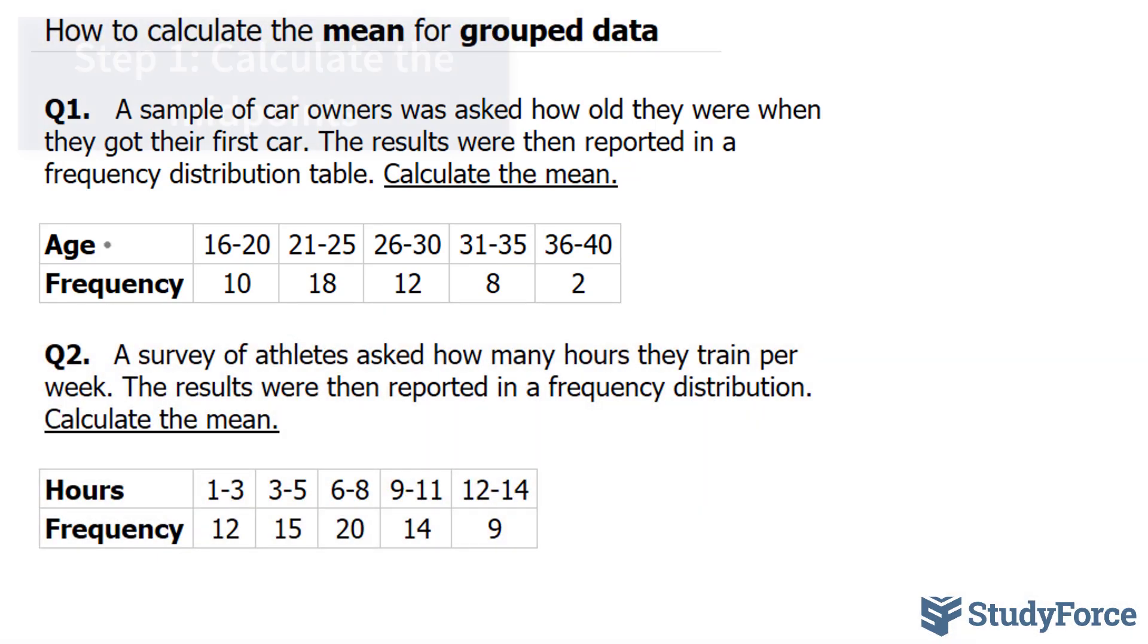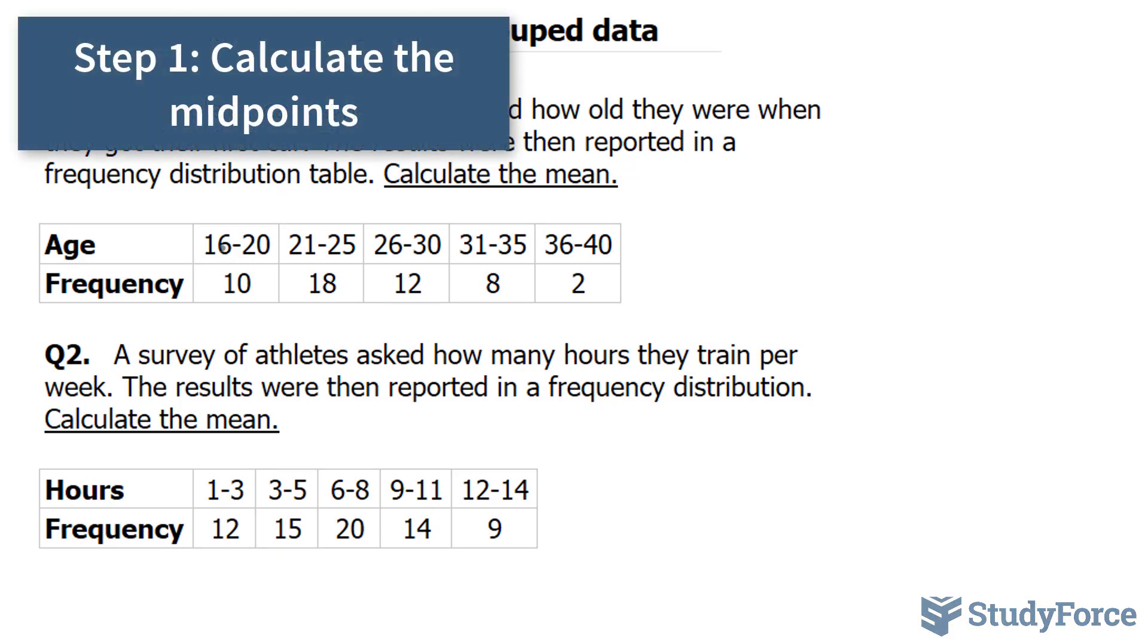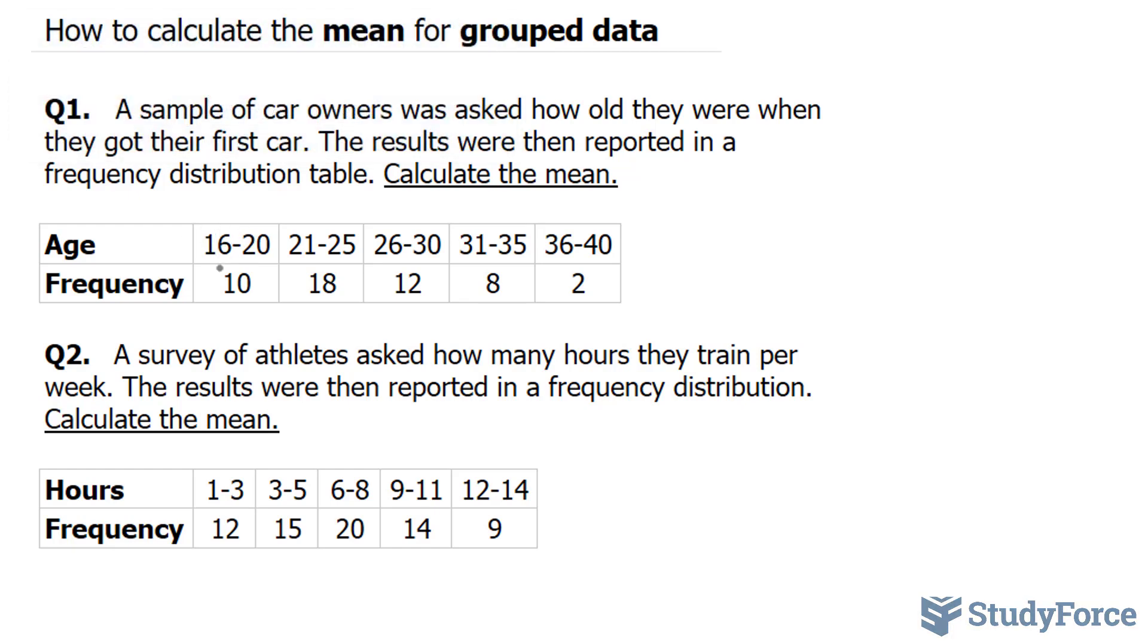The first step to doing this is to find the midpoints of the age groups. We'll start off by finding the midpoint from 16 and 20, and to do that you add these two numbers up and divide by 2. So 20 plus 16 divided by 2 is 18. We'll do the same thing here. 25 plus 21 divided by 2 is 23. These two is 28. These two is 33. And for these two, it's 38. So we found our midpoints for each.